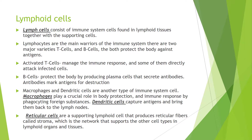Lymphoid cells consist of immune system cells found in lymphoid tissues together with supporting cells. Lymphocytes are the main warriors of the immune system. There are two major varieties: T cells and B cells, and they both protect the body against antigens.